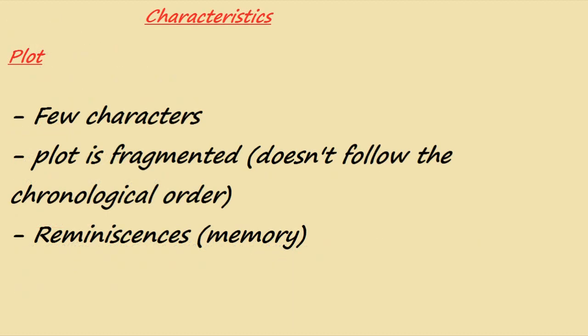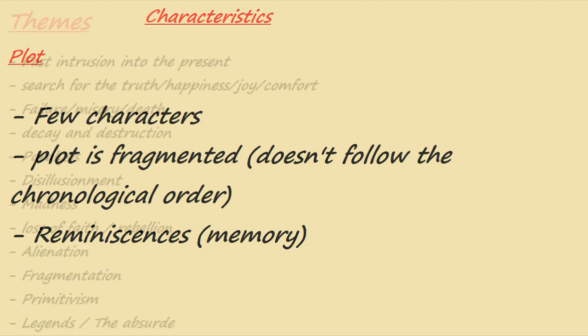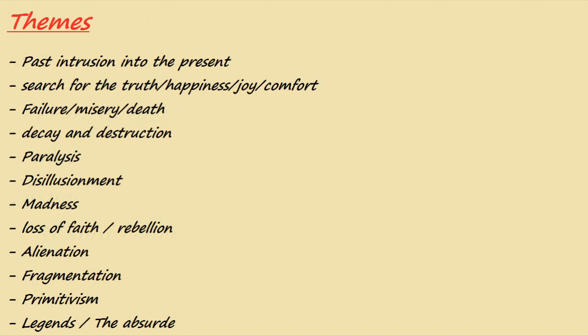In terms of characteristics, we start with the plot. In the plot we find few characters, and it is usually fragmented — meaning it doesn't follow chronological order. For example, within a story you might start at 1920, go to 1939, then come back to 1925 and then 1921. It is broken and doesn't follow chronological order. There is also something called reminiscence, which is related to memory — the ability to recall or remember something about the past.